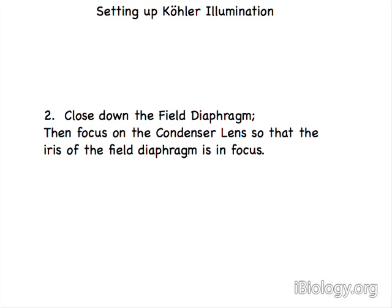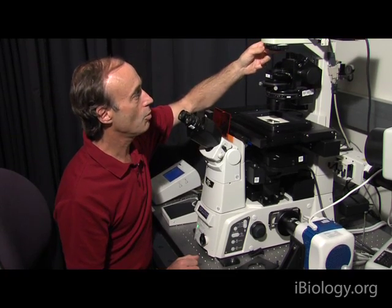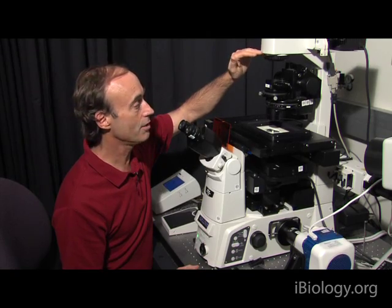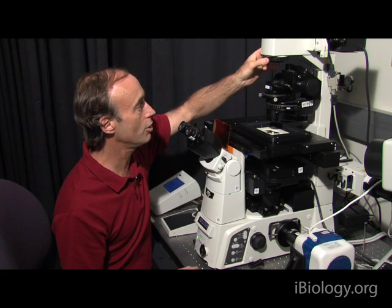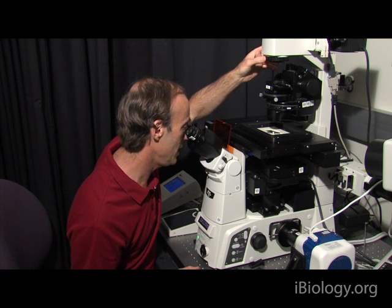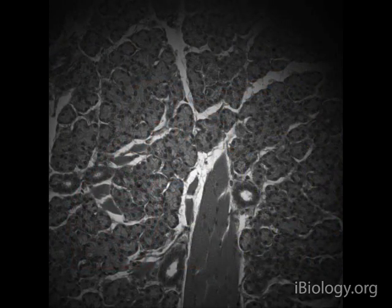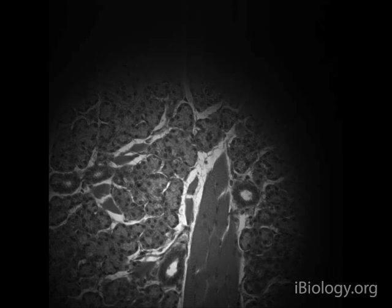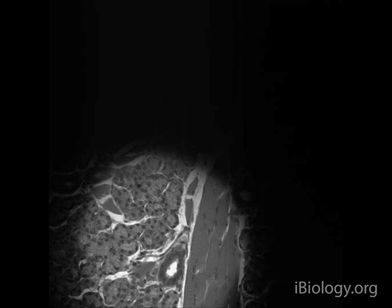The next step is to adjust the condenser lens to the right position. I know it will be in the right position when the image of the field diaphragm is in clear view in the specimen plane. So first I'm going to close down the field diaphragm. Initially I can't see it at all. Now I'm going to adjust the condenser lens — I'll bring it down — and I can see the image getting brighter and brighter, and I can see the edges of the field diaphragm come into focus. There it is. That's the second step of Köhler illumination.